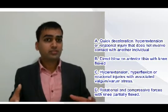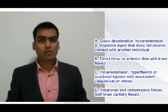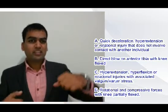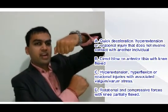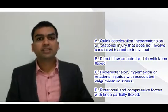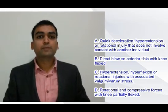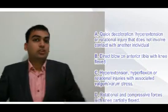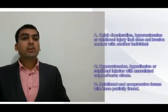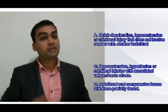Option B is: a direct blow to the anterior knee causing posterior displacement of the tibia. I can exclude this option immediately. When there is a direct anterior blow to the knee, the tibia is pushed backward, and it is the posterior cruciate ligament (PCL) that resists posterior displacement of the tibia on the femur. So this mechanism injures the PCL, not the ACL. This is not the right answer.